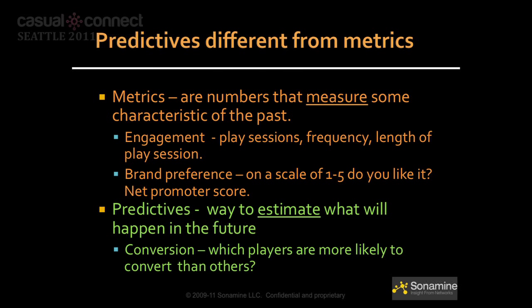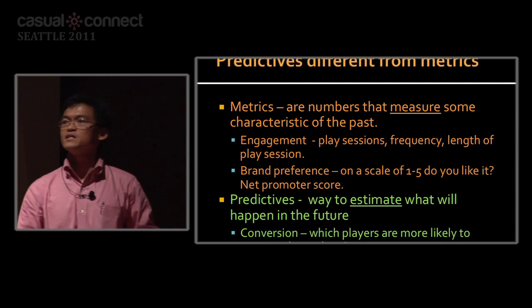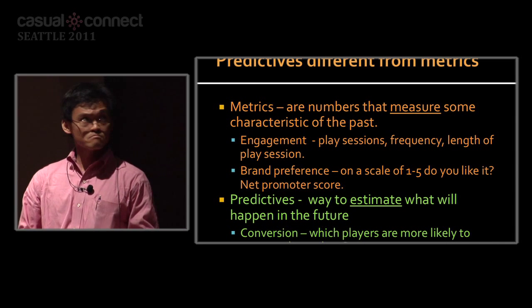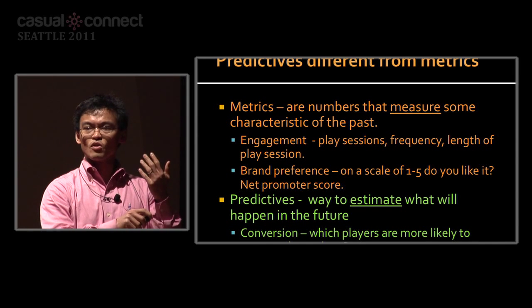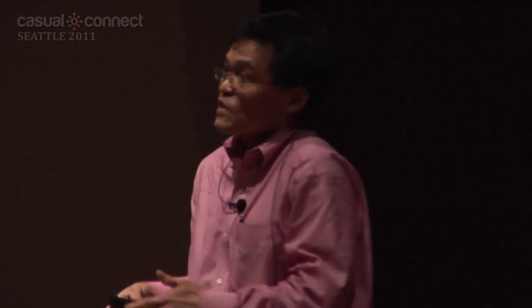How are metrics and predictives different? Number one, metrics are measurements — they measure something from the past, like engagement or play sessions. Predictives estimate what will happen in the future: which players are more likely to convert than others? Metrics are the past, even the last five seconds — that's what they call real time. Predictives are the future: in the next ten minutes, who is going to convert?